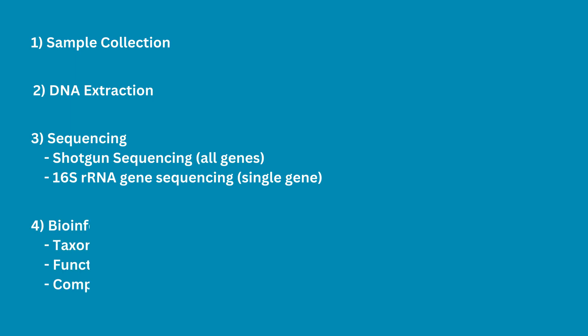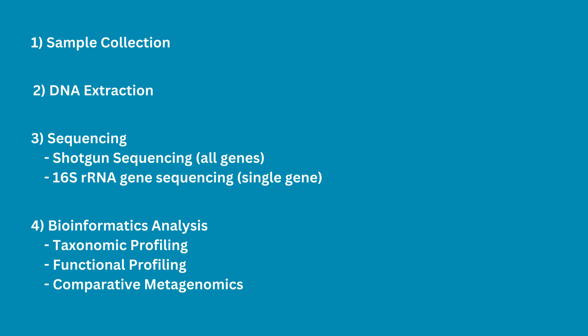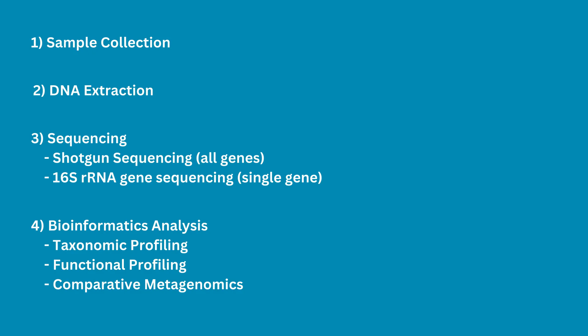Finally, we use powerful computer algorithms to analyze this data. Taxonomic profiling tells us what types of microorganisms are present and their relative abundances. Functional profiling helps us understand what these microorganisms are capable of by looking at their genes — this can tell us, for instance, if they can break down certain substances or produce specific compounds. Comparative metagenomics allows us to compare different samples, for instance, comparing the gut microbiomes of healthy individuals to those with a specific disease.